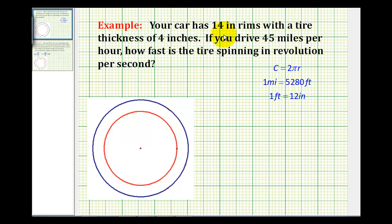Your car tire has 14-inch rims with a tire thickness of 4 inches. So if the rim is 14 inches, that would be the diameter of this red circle. And the tire thickness is 4 inches, so the distance from here to here would be 4 inches. So the radius that we're concerned about in this problem would be from the center to the edge of the tire.